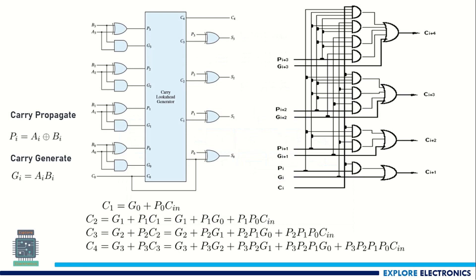Let us see the block diagram. C0 is the input carry and A0, B0 are the first set of inputs (LSBs). These generate P0 and G0. By using P0 and G0 we are going to generate the carry to the next stage. Here you can see C0, G0 and P0 — P0 and G0 are generated from A0 and B0. Using these two signals we generate C1.